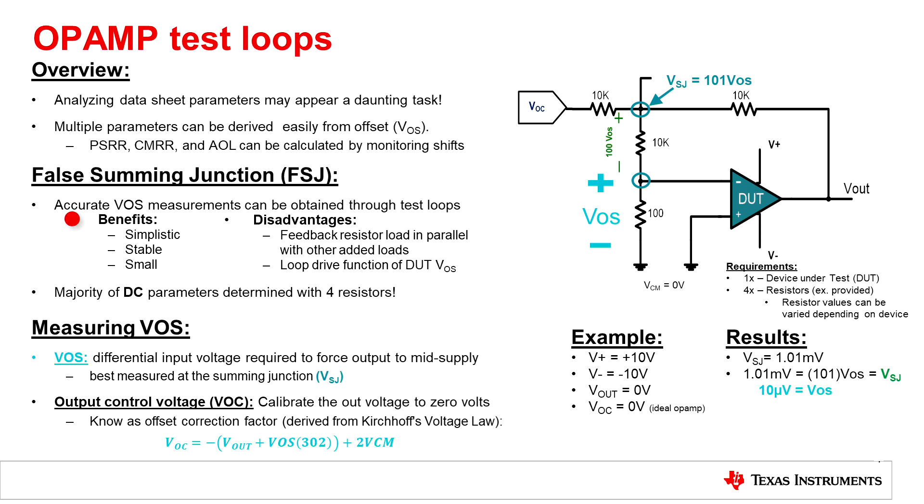The benefits of the false summing junction are that it's simplistic, and its size is small.